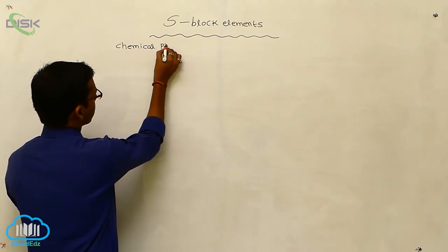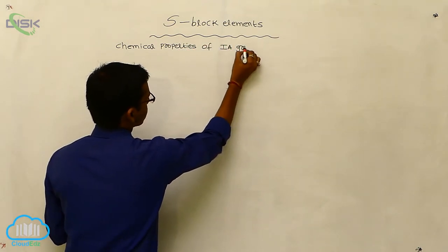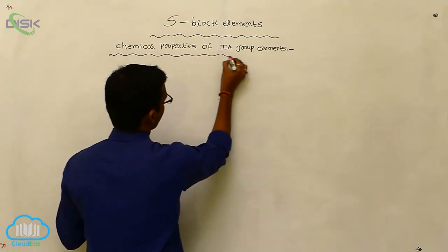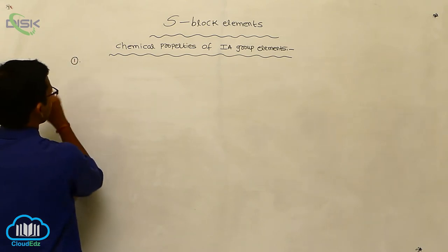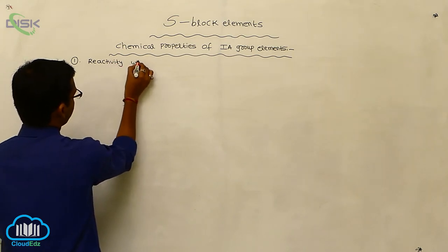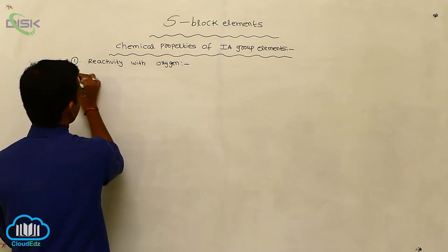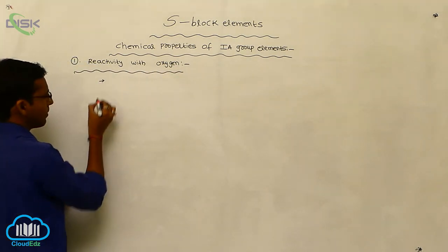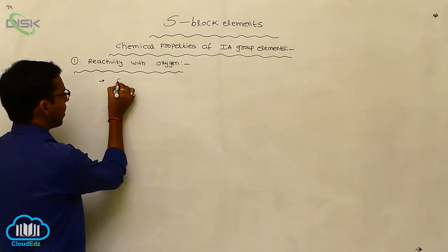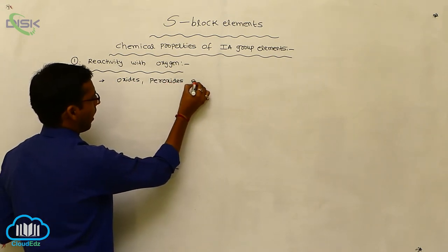Chemical properties of the first group elements. The first property is reactivity with oxygen. The first group elements generally react with oxygen to produce oxides, peroxides, and superoxides.